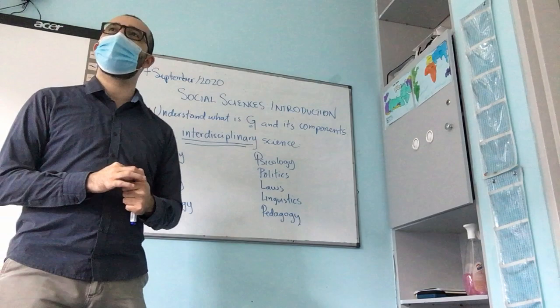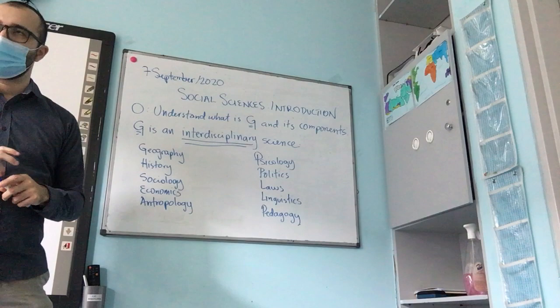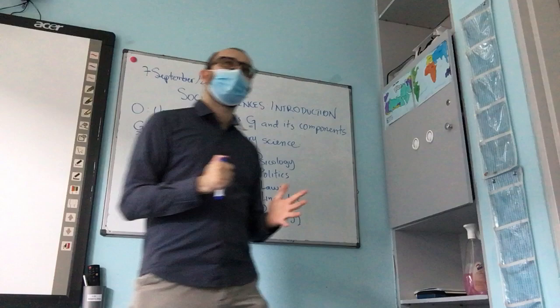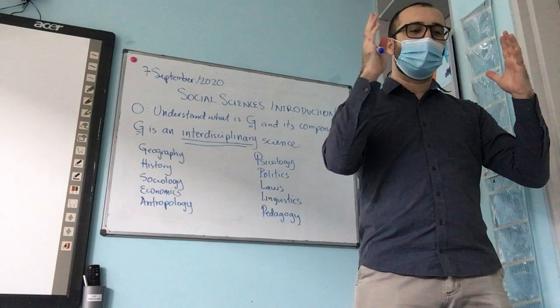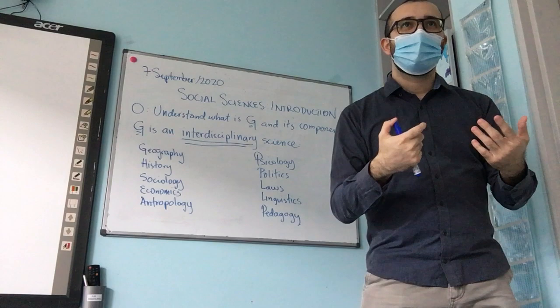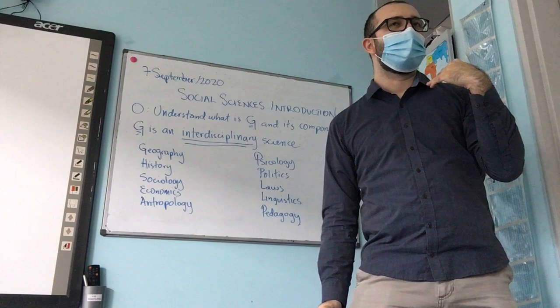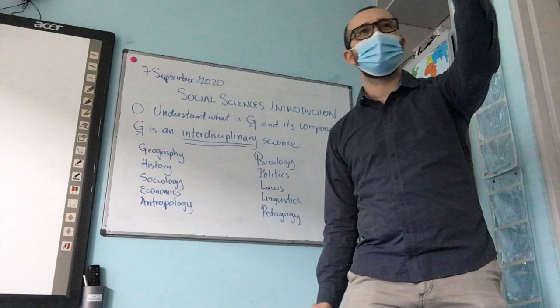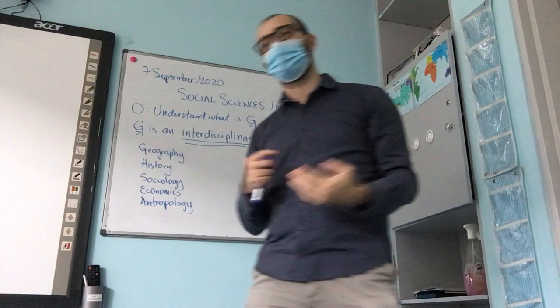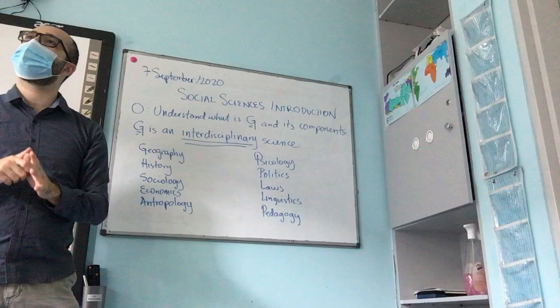What does a sociologist do? A student answered: it studies how people interact with each other or how societies work. Yes, you're right. Sociology studies the relationships, connections, and interactions between humans, and also between humans and institutions.